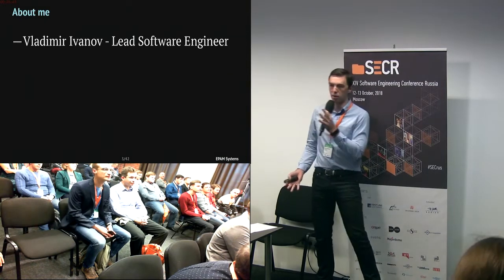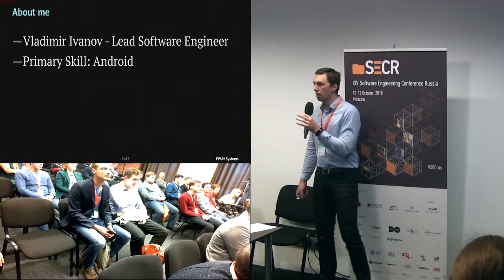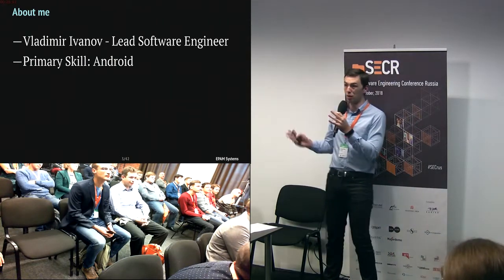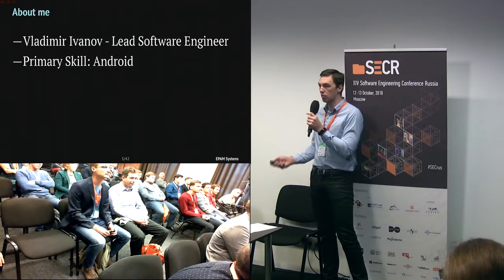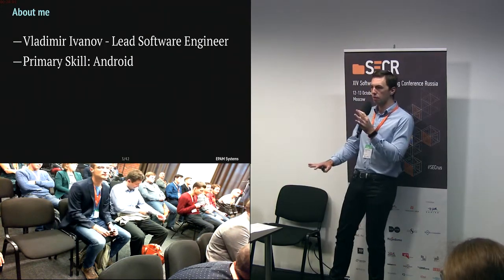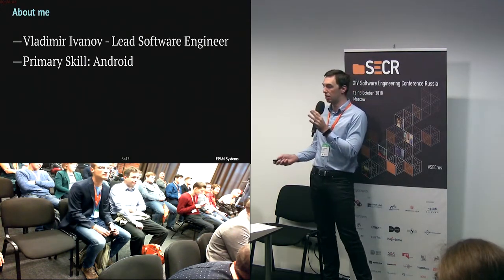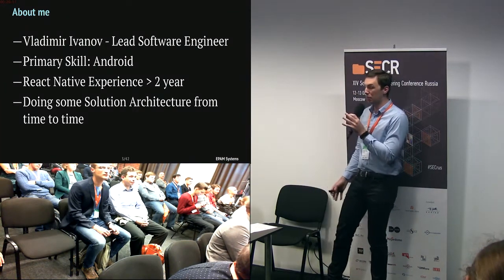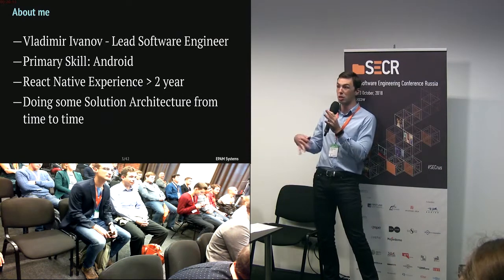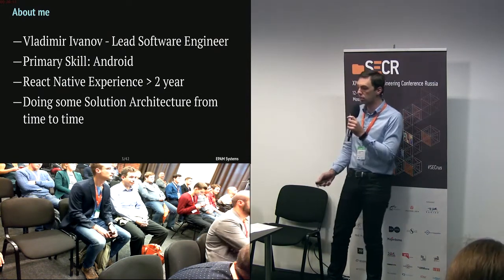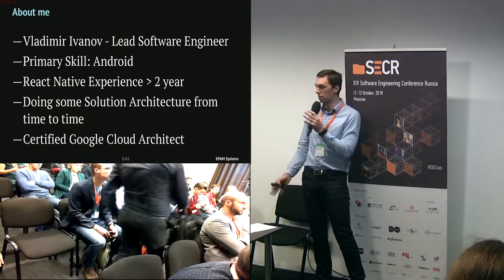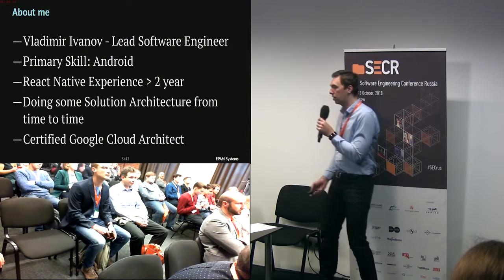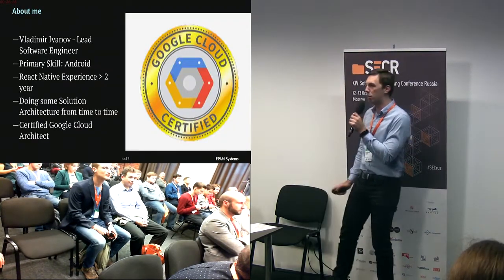About me: my name is Vladimir Ivanov. I'm a lead software engineer at EPM Systems. My primary skill and occupation is Android development — I've been doing mobile applications for more than seven years. I also do some cross-platform mobile development, solution architecture from time to time, and I recently passed the Google Cloud Architect Certification, which was tough but cool.